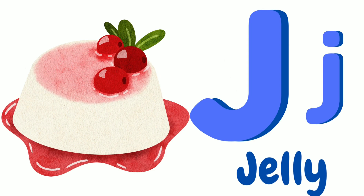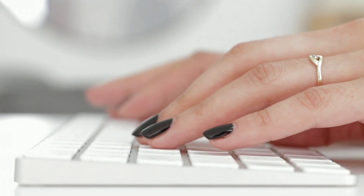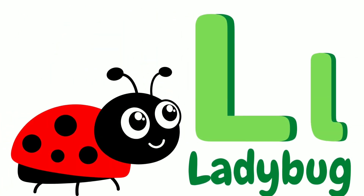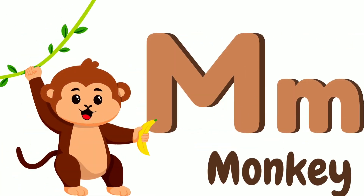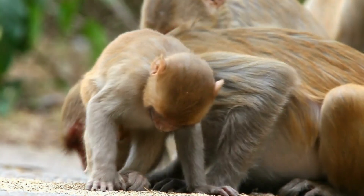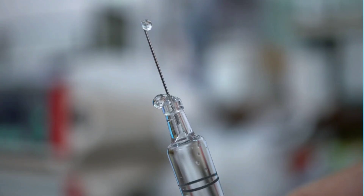J is for Jelly. Jelly, jelly. This is a jelly. K is for Keyboard. Keyboard, keyboard. This is a keyboard. L is for Ladybug. Ladybug, ladybug. This is a ladybug. M is for Monkey. Monkey, monkey. This is the monkey. N is for Needle. Needle, needle. This is the needle.